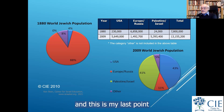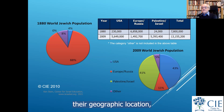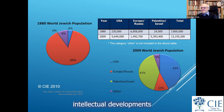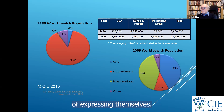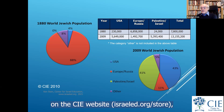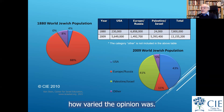In the 1800s, Jews decided not only to change their geographic location, but also to change the way they would practice as Jews. Reform Judaism, Conservative Judaism, Marxism — they're all evolutionary intellectual developments that come about in the 1800s. Jews choose new ways of expressing themselves. The debate at the first Zionist Congress in 1897 was quite extraordinary. If you're interested, there's a pamphlet on a simulation for the first Zionist Congress on the CIE website.